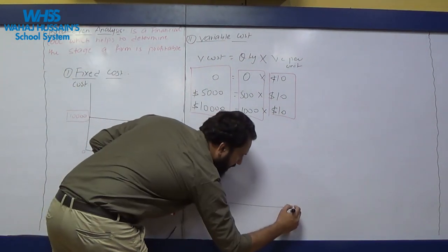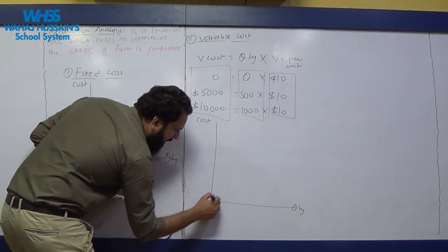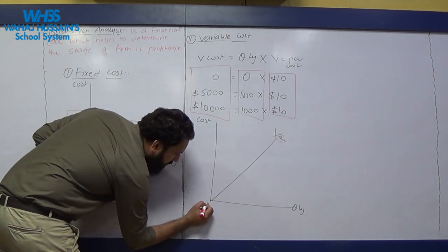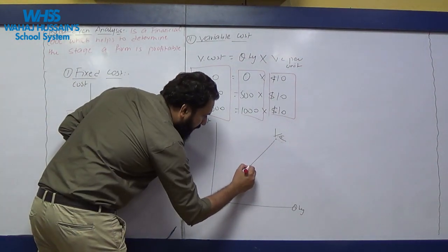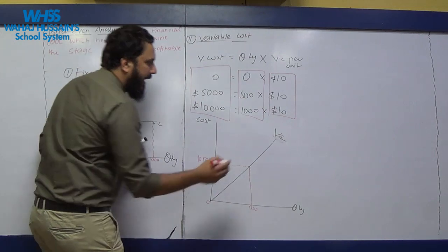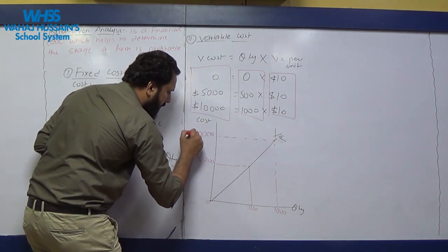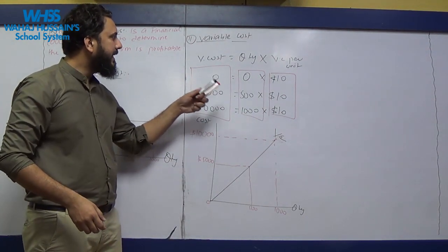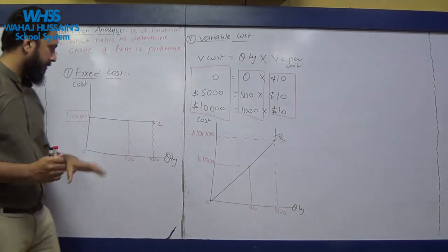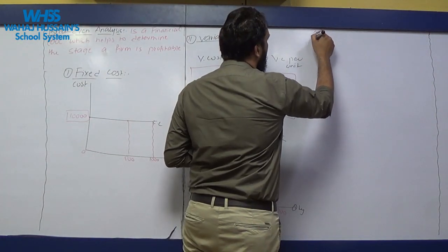On the diagram, quantity is on one axis and cost on the other. The variable cost curve starts from the origin and moves upward. At the origin, when we produce nothing, variable cost is zero. At 500 units it is $5,000, and at 1,000 units it is $10,000. The level of quantity changes, so the variable cost changes too — this is your variable cost curve.